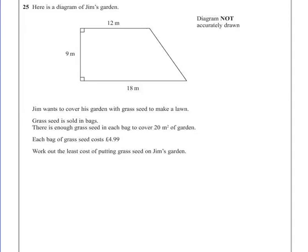Question 25. Here is a diagram of Jim's garden. Note this says it's not accurately drawn, so you can't start drawing lines on or take your ruler and measure it. Jim wants to cover his garden with grass seed to make a lawn. Grass seed is sold in bags. There is enough grass seed in each bag to cover 20 metres squared of garden. Each bag of grass seed costs £4.99. Work out the least cost of putting grass seed on Jim's garden.